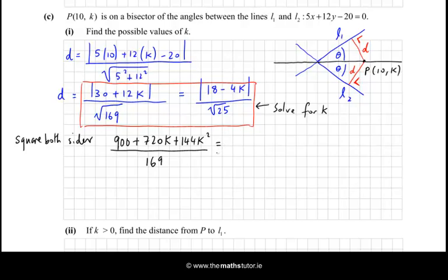When we square 18, we get 324. Twice 18 by 4 is also 144. And 4² is 16, and then k² is also 16, sorry, it's 144k. So there we have it. And then we square the bottom, and we just get 25.